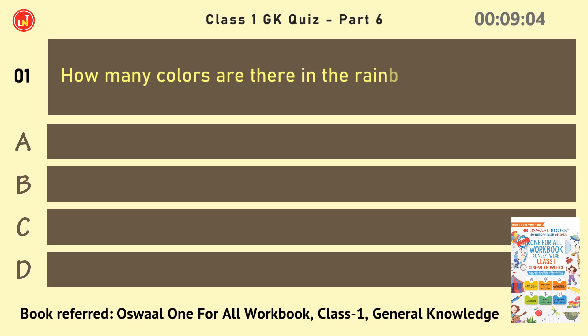Question 7: How many colors are there in the rainbow? Answer: 7.